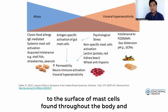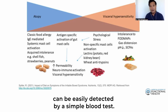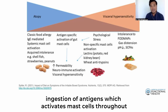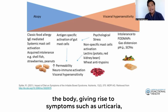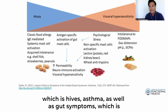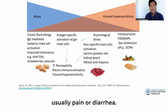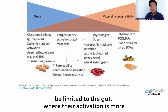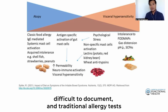IgE-mediated allergy can be easily detected by a simple blood test. Oral ingestion of antigens activates mast cells throughout the body, giving rise to symptoms such as urticaria (hives), asthma, and gut symptoms like pain or diarrhea. It's also important to mention that mast cell activation can be limited to the gut, where their activation is more difficult to document, and traditional allergy tests such as specific serum IgE or skin prick tests may be negative.